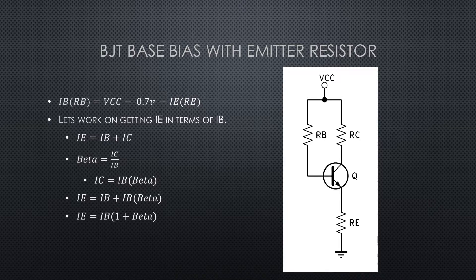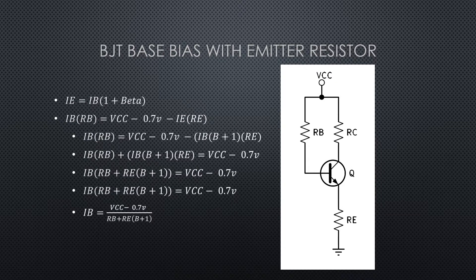We also know that beta equals IC over IB. If we put that equation in terms of IC, IC equals IB times beta. Now substitute that IC into the original IE equation: IE equals IB plus IB times beta. Factor out the IBs from the right hand side, and we get IE equals IB times the quantity one plus beta, sometimes referred to as beta plus one.